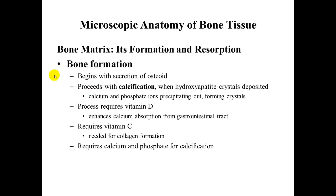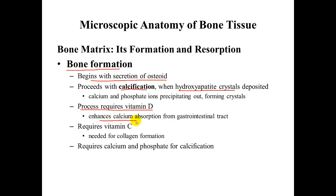The general process of bone formation begins with the secretion of osteoid, which is the organic component. Then you get the calcification of hydroxyapatite crystals that form in between the collagen fibers. The process requires vitamin D, which enhances calcium absorption from the GI tract, and vitamin C, which is needed for collagen formation.